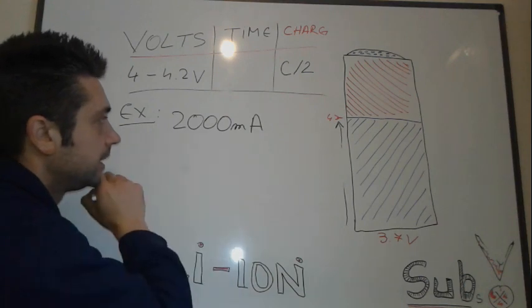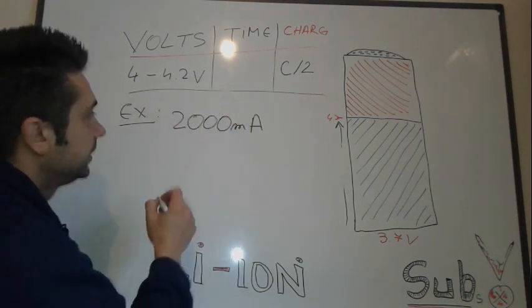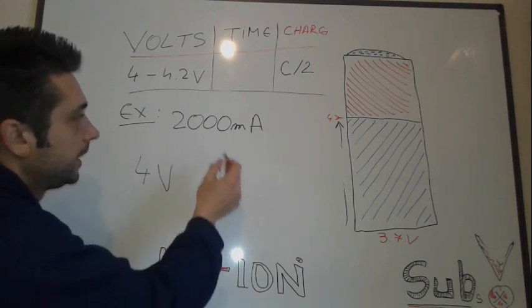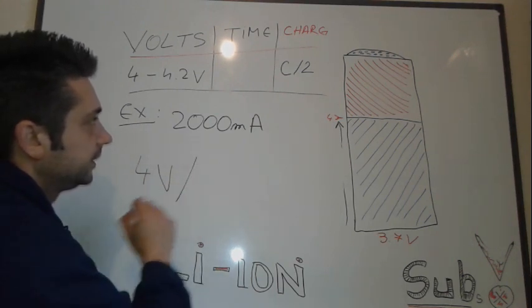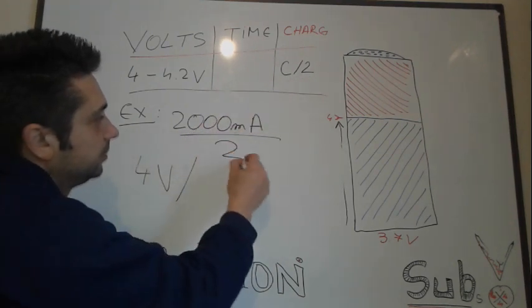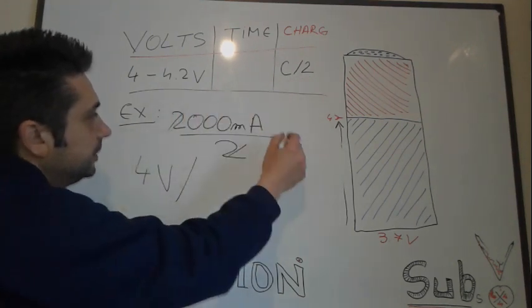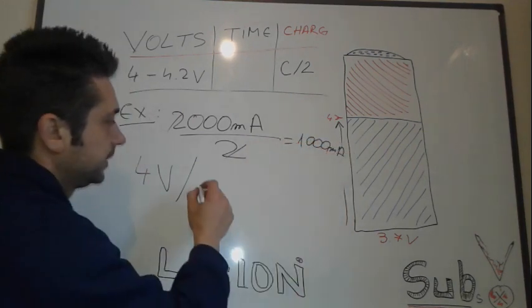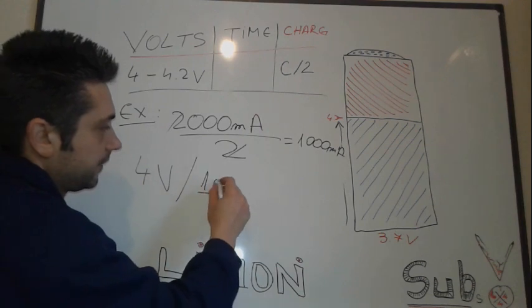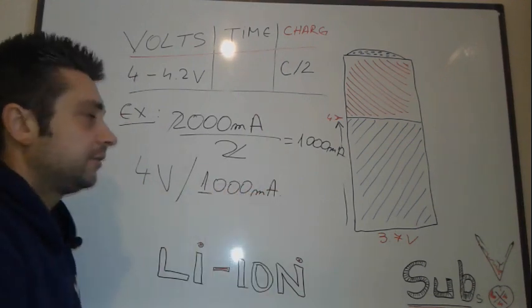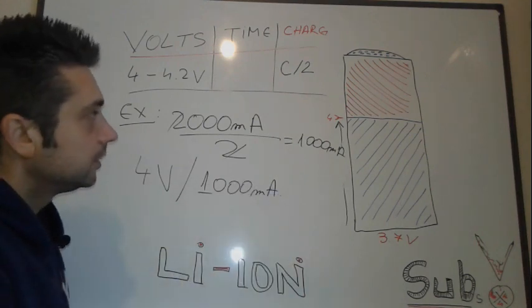So let's see, if we have a battery that has the capacity of 2000 milliamps, we're gonna need a power supply that's gonna provide like four volts and at the rate of C over two, that means 2000 over two, so we're gonna divide this one by this, so we're gonna need 1000 milliamps.